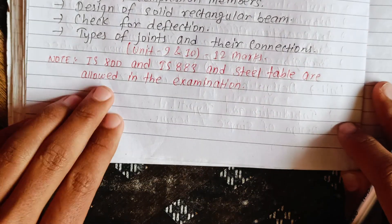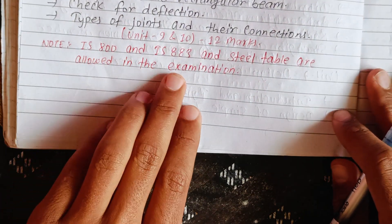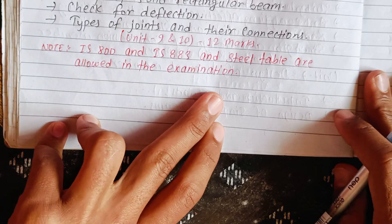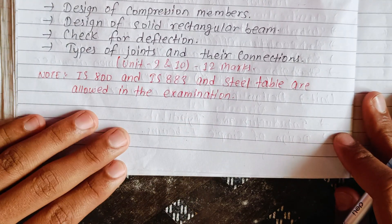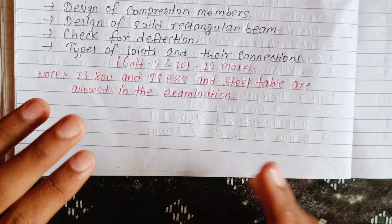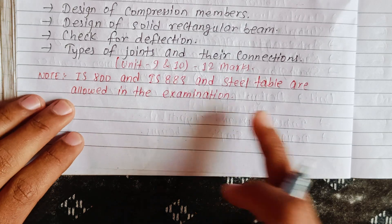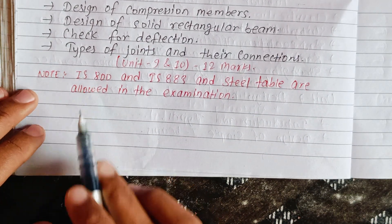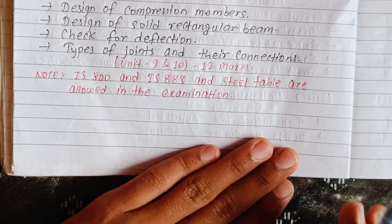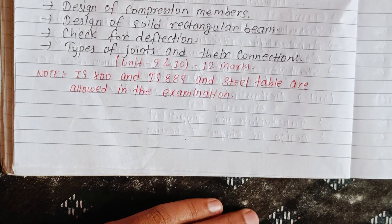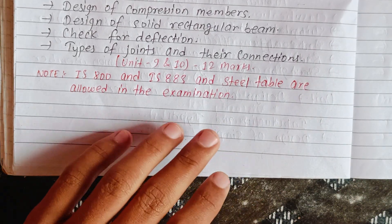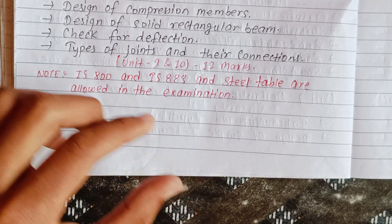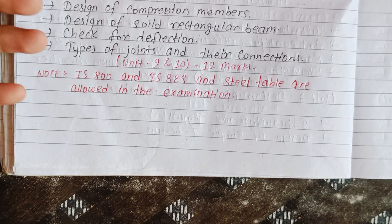IS 800, IS 883, and the steel table are allowed in the examinations. You can download the PDF of these Indian Standard codes. A PDF link will be provided so you can copy examples and refer to the codes during the exam.